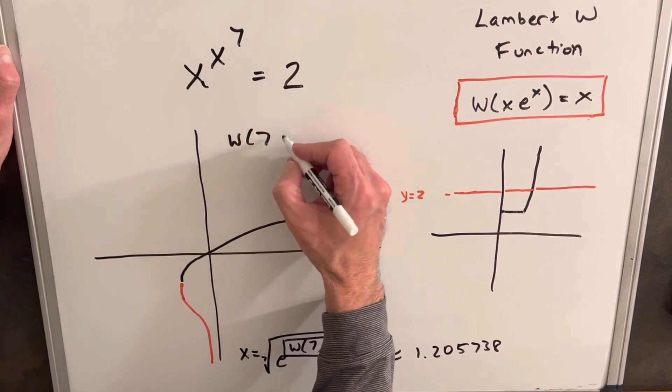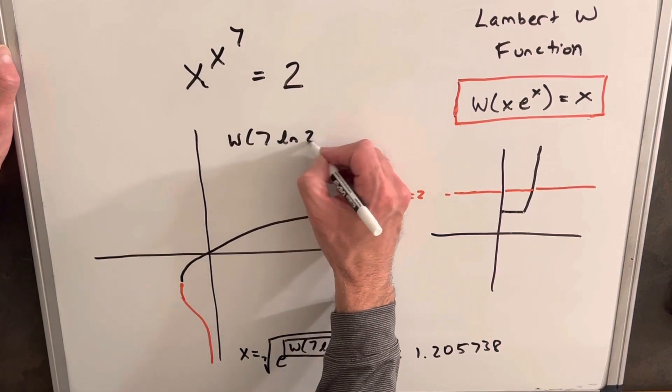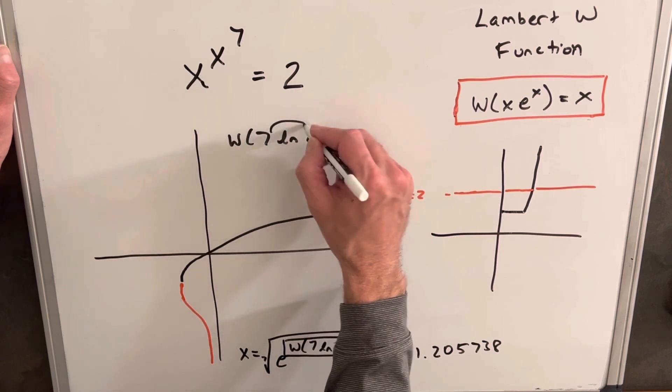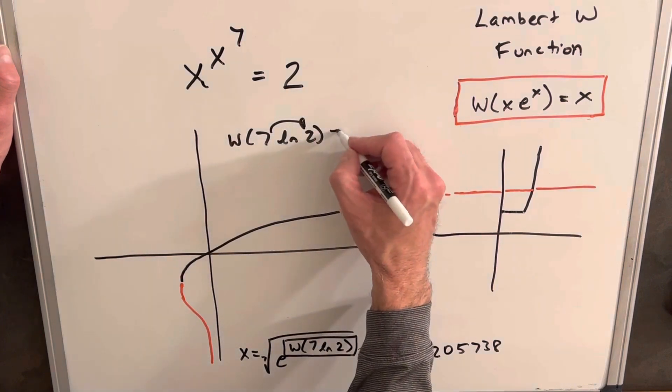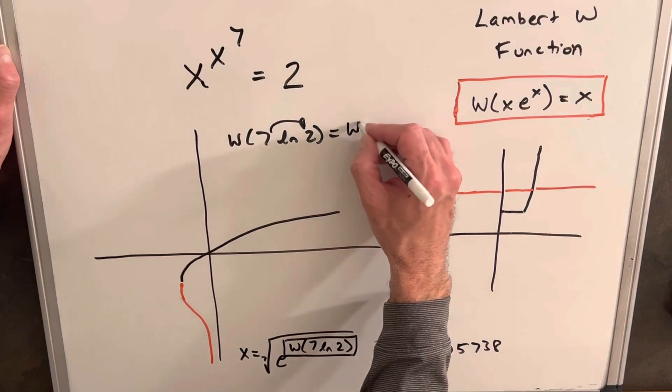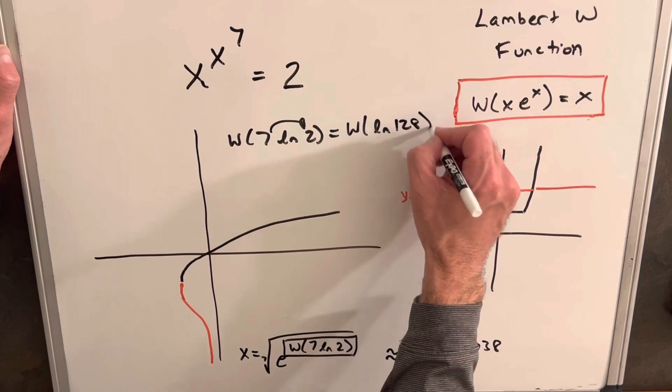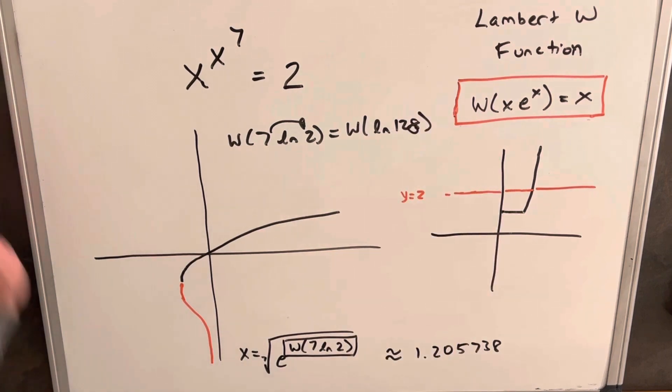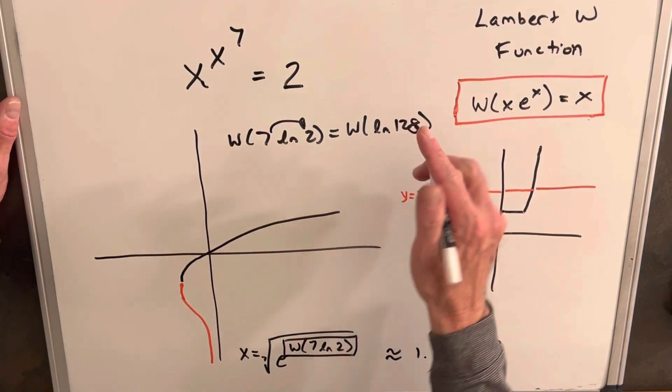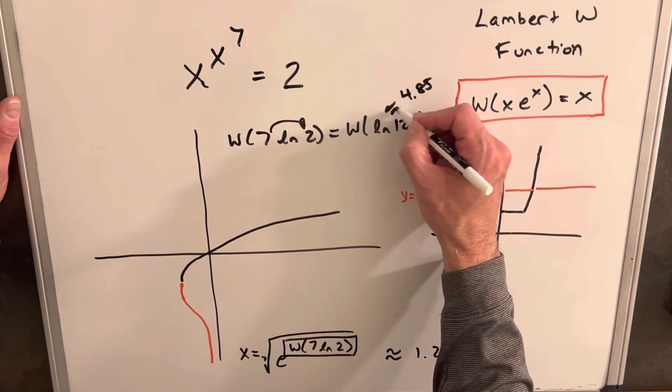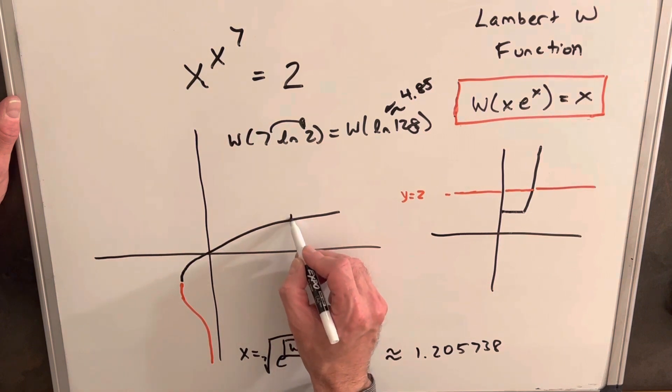So the Lambert W function of 7 ln 2—7 ln 2 is actually 2 to the 7th if we bring this back—this is actually the same thing as ln 128. Not that we needed to do this to calculate it, because you could just calculate it like this, but I kind of like it better this way. All we really need to know is that ln 128 is positive, but just for the sake of argument, this is approximately 4.85. So let's say it's right here.